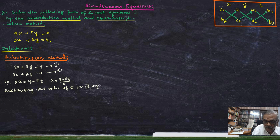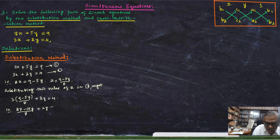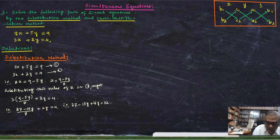Substituting this value of x in equation 2, we get 3x plus 2y equal to 4, that is 27 minus 15y divided by 8 plus 2y is equal to 4. Multiplying throughout by 8: 27 minus 15y plus 16y is equal to 32. This implies y equal to 32 minus 27, which is equal to 5.